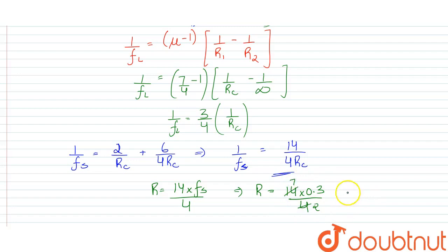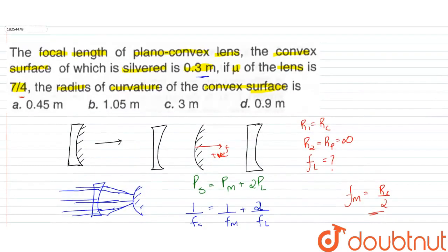Calculating: R_c = 4.2 / 4 = 1.05 meters. This is the radius of curvature of the convex surface, which is given by option B. Thank you.